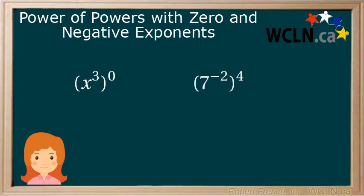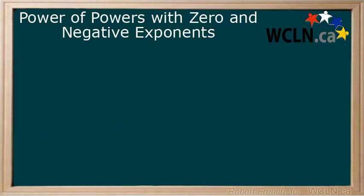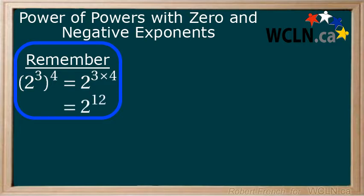In this tutorial we will be looking at what to do when you have a power of a power involving negative exponents and/or zero exponents. There's a couple of important points to remember. When you have a power of a power, you multiply the two powers together. 2 to the power of 3, raised to the power of 4, equals 2 to the power of 3 times 4, which equals 2 to the power of 12.